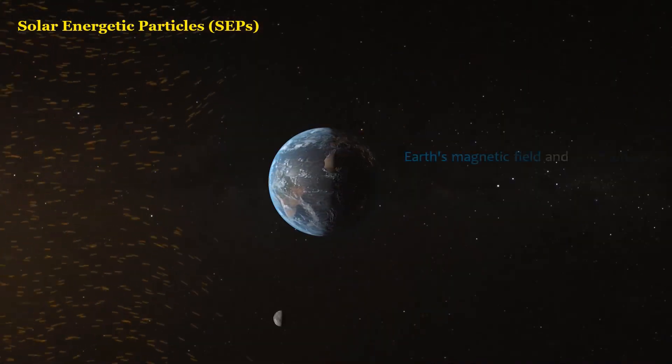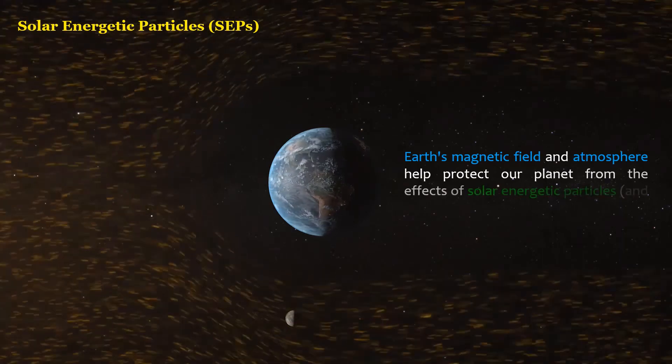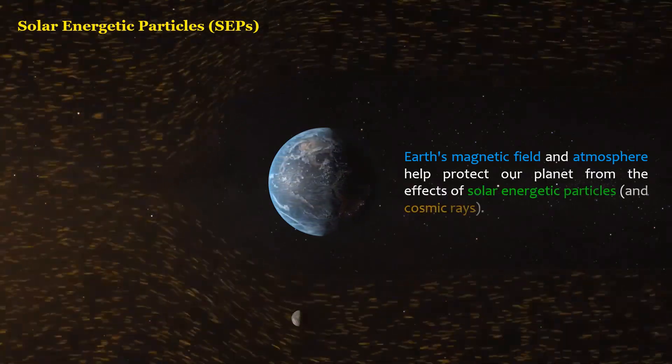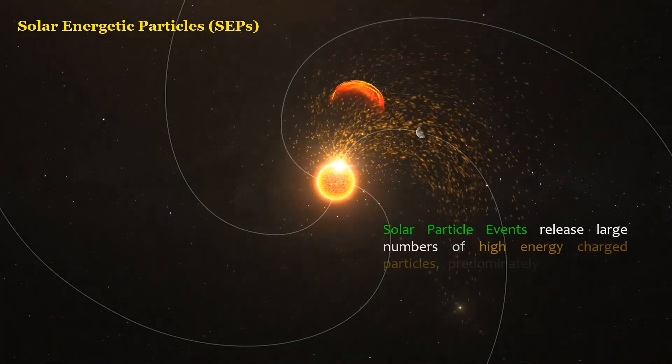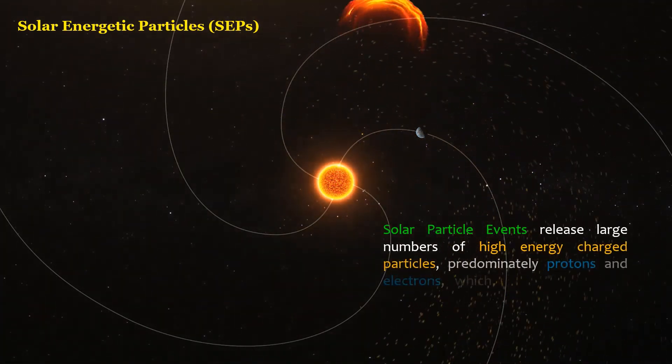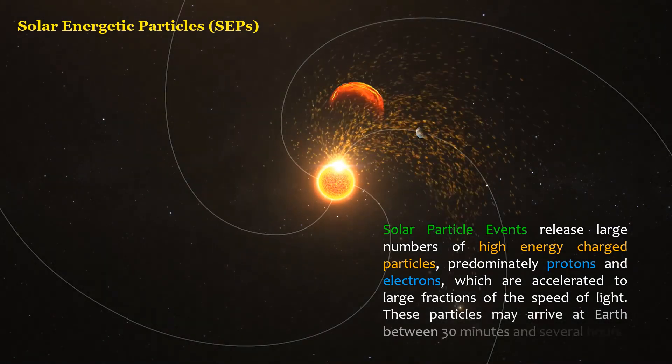Earth's magnetic field and atmosphere help protect our planet from the effects of solar energetic particles and cosmic rays. Solar particle events release large numbers of high-energy charged particles, predominantly protons and electrons, which are accelerated to large fractions of the speed of light. These particles may arrive at Earth between 30 minutes and several hours.